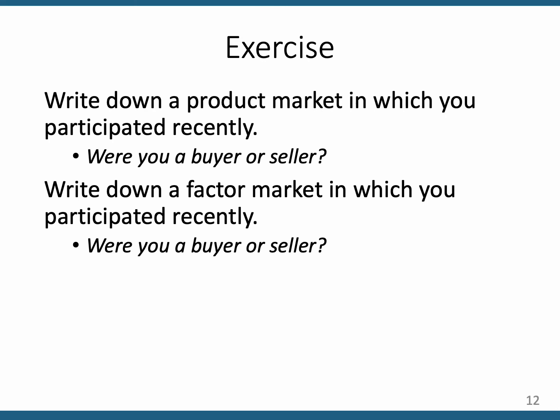Now write down a factor market in which you participated recently. Do you work anywhere right now? If you do, you are producing GDP — producing goods and services. You work for an employer, so you sold your labor services today for however many hours you worked, and you helped produce some good or service that your business then sold. So you participated in a factor market, a resource market, as well.